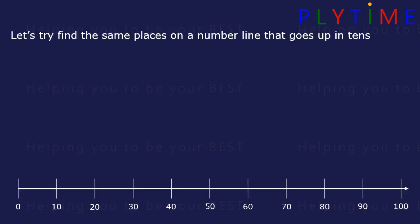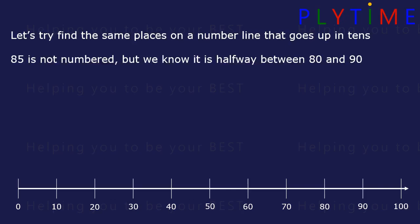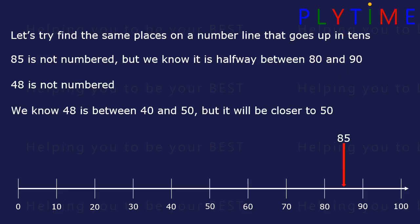Let's try and find the same places on the number line that goes up in tens. Where's 85? We know it's halfway between 80 and 90, it would be here. And 48 is not numbered, but we know it's between 40 and 50 but closer to 50, so it would be around here.